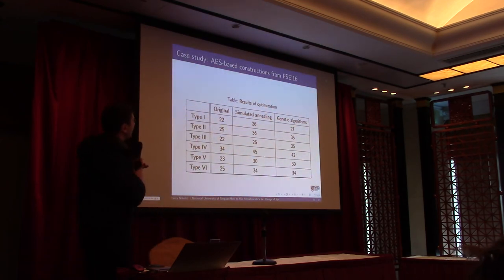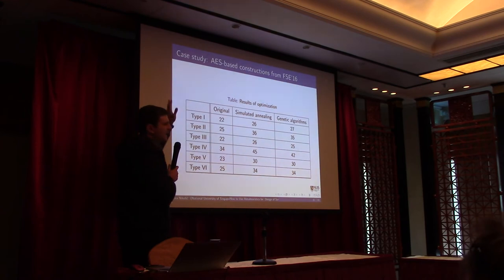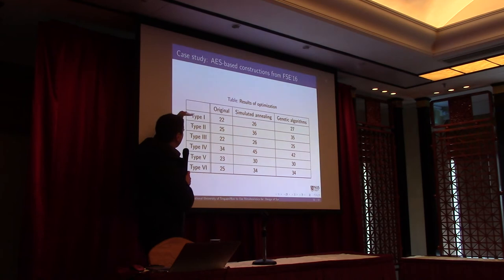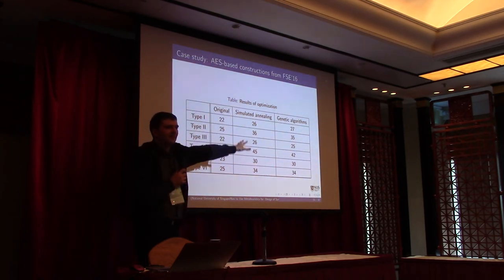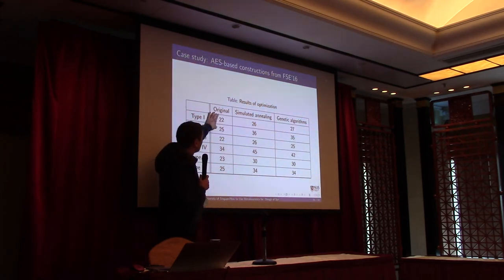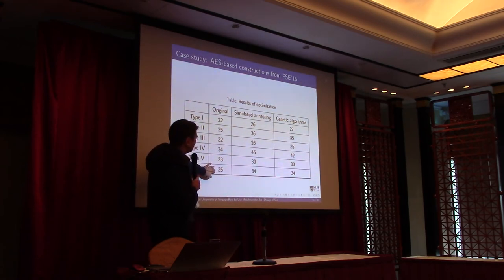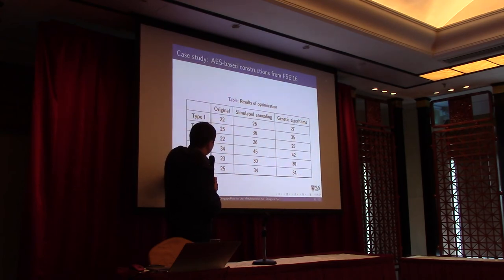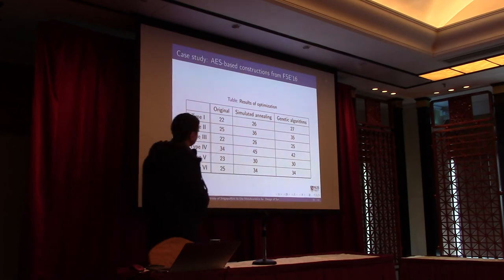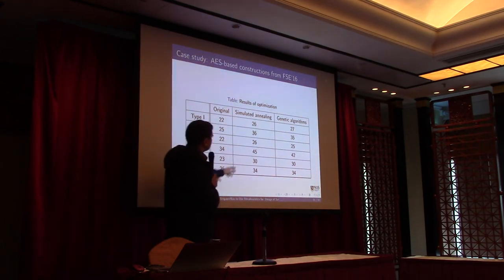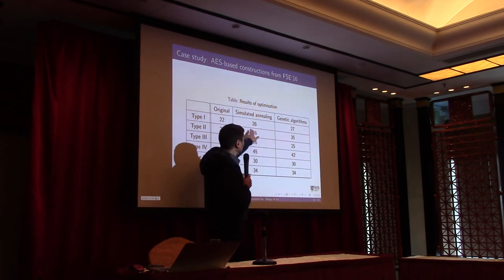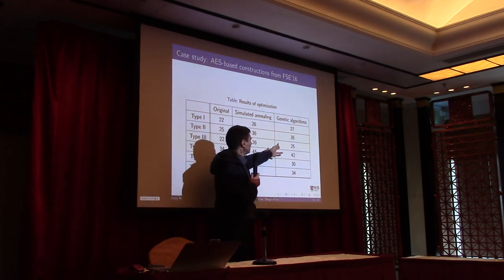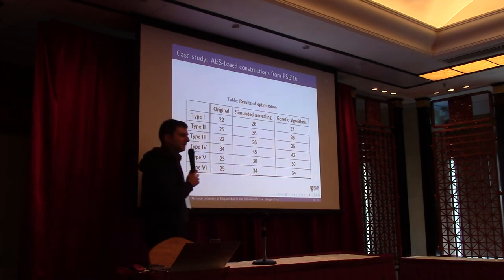We also applied our metaheuristics to AES-based constructions from FSE. We applied to six types already presented in that paper. Comparing the original results with our results, we managed to improve six out of seven cases, with some improvements being quite significant. Interestingly, simulated annealing, which is even simpler than genetic algorithms, outperformed genetic algorithms in this particular case.